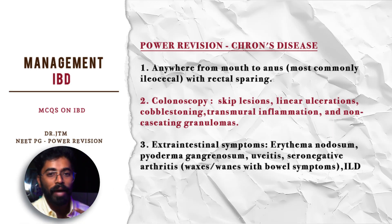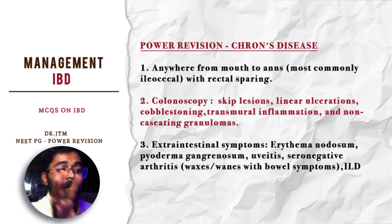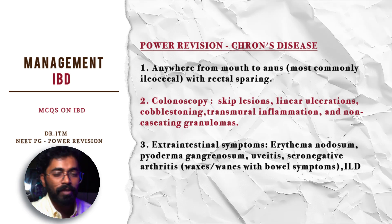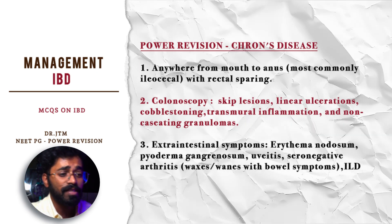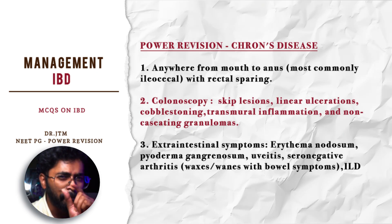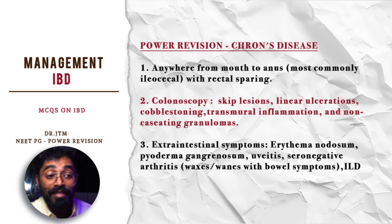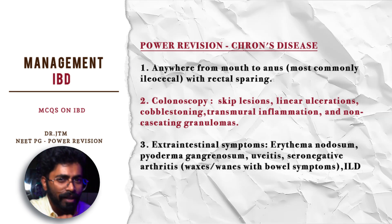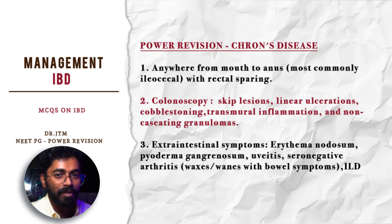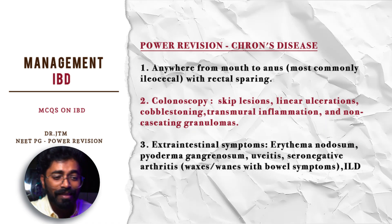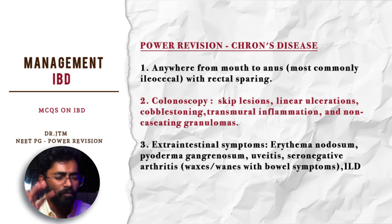Power revision: Crohn's disease can affect anywhere from mouth to anus, except the rectum. The most common location is the ileocecal area. On colonoscopy, key features include skip lesions — very important — linear ulcerations, cobblestoning, transmural inflammation involving the entire thickness of the bowel wall, and non-caseating granulomas, which is a classical point that can be asked in MCQs.